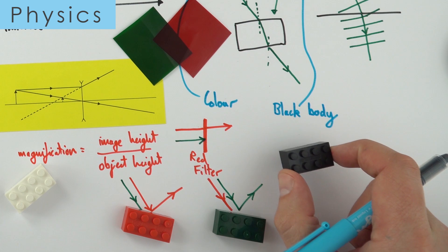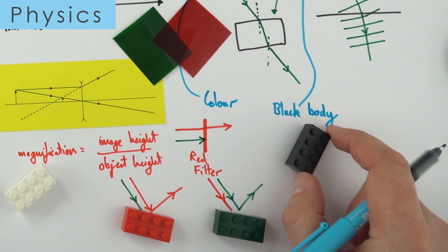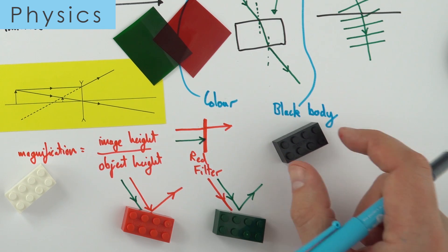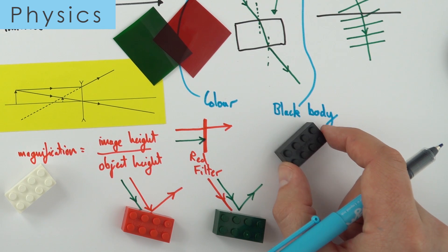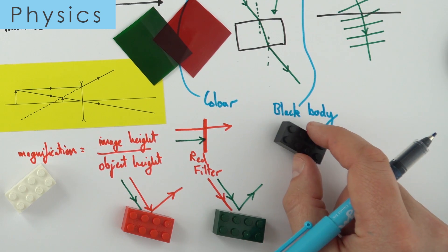This brings us nicely onto a black body. In physics, a perfect black body is something which absorbs all of the radiation landing on it. That means all of the light, all of the infrared, it absorbs it all. It is also a perfect emitter, and that means it gives out this radiation really quickly.